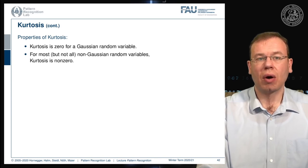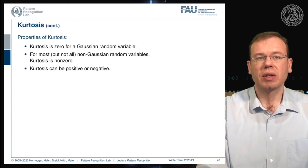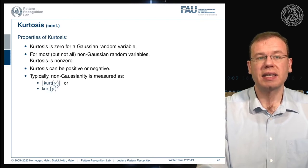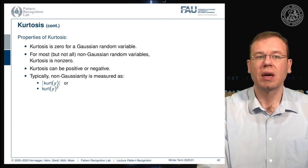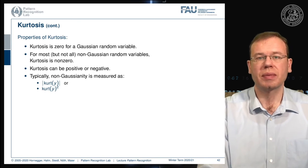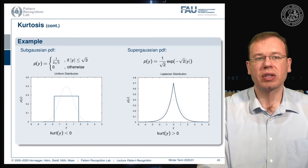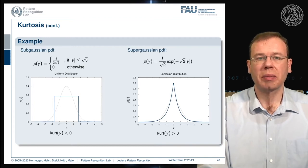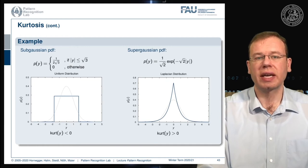For most non-Gaussian random variables the kurtosis is non-zero, so non-Gaussianity is measured as the absolute value of the kurtosis or the kurtosis squared. For a sub-Gaussian distribution like the uniform distribution, the kurtosis is negative. For a super-Gaussian distribution like the Laplacian, the kurtosis is greater than zero.